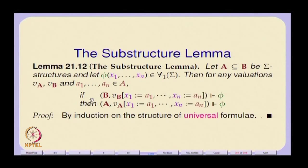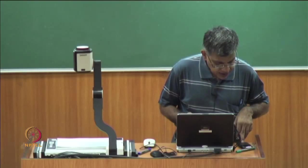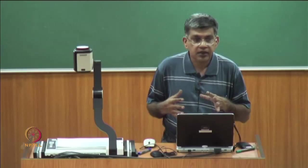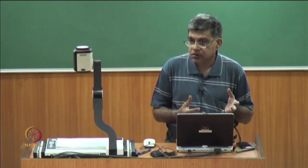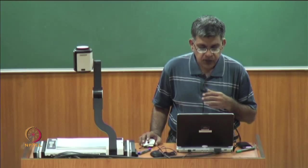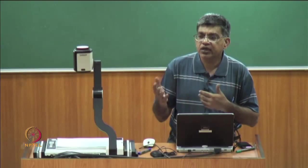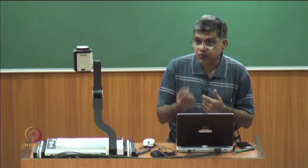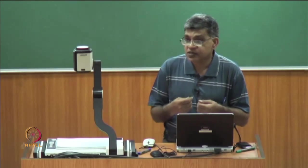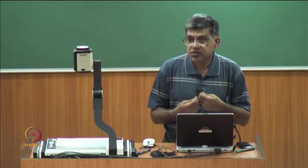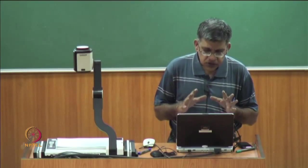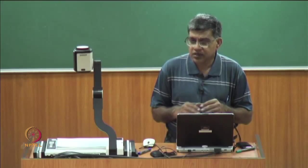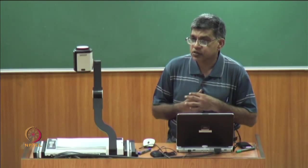We have formalizations for subgroups, sub-lattices, and sub-monoids. Within the same signature, in certain cases we can move in one direction from superstructures to substructures, and in the case of isomorphism we can move both ways. These formalizations are necessary prerequisites before we come to the more interesting aspects of first-order logic reasoning.